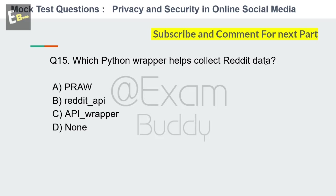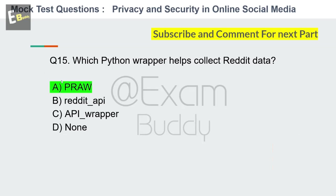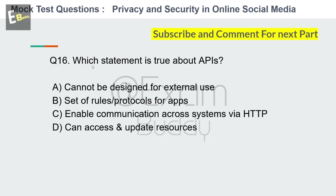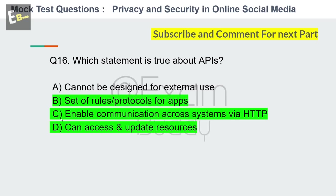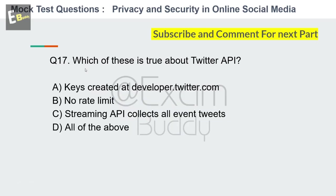Question 15/16: Which Python wrapper helps collect Reddit data? Moving to question 16: Which of these describes an API? Options include: cannot be designed for external use, set of rules/protocols for apps, enable communication across systems via HTTP, can access and update resources. The answer is D: C and D.